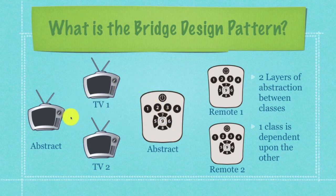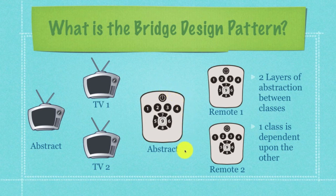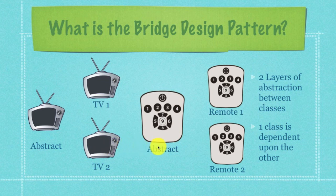Then we're going to create more concrete devices. This first television is going to define what buttons five and six do: button six increases the channel number and button five decreases it. However, TV2 is actually a DVD player — button six will skip to the next chapter, while button five will skip to the last chapter. Then we come to our abstract remote control, which will hold a reference to a specific device, either the basic TV or the TV with a DVD player connected to it. It will then define all those abstract methods that will differ between the two remotes.